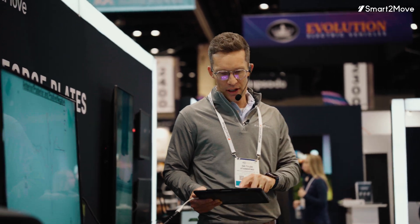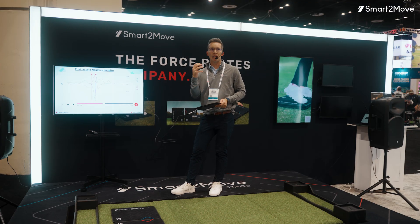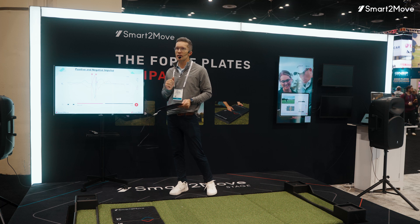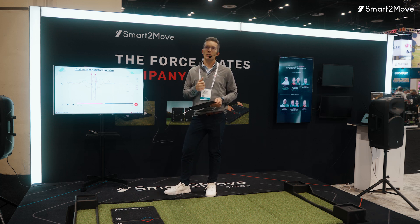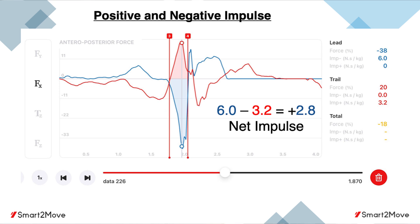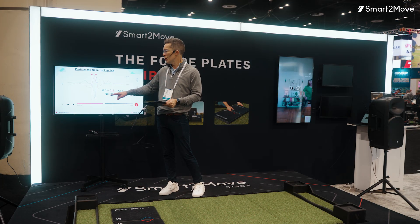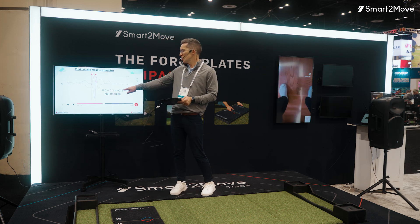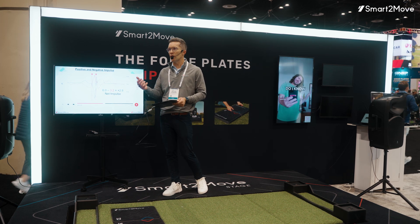What we need to understand is not just those forces, when they peak, and how big they are — that's a big part of the puzzle — but I like to dive into something called impulse. The best way to describe impulse is how we apply that force over a period of time. Looking at these two graphs, I ask: what's the actual area under the curve? I can calculate what's called a net impulse.